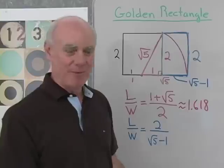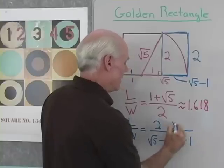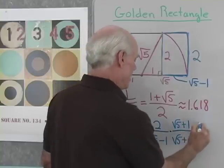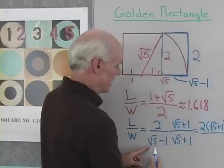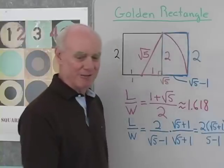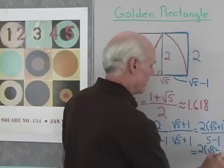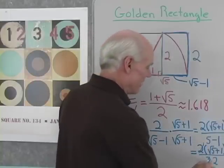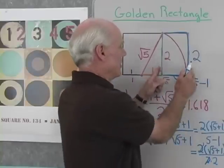We can show that by rationalizing the denominator. I'm going to multiply by (√5 + 1) in both the numerator and denominator. In the numerator I get 2 times (√5 + 1), and in the denominator I get √5 squared minus 1 squared — so 5 minus 1, which is 4. That comes out to be 2(√5 + 1) all divided by 4, which is 2 times 2. The 2's divide out and I end up with (1 + √5) / 2 for the ratio of length to width in this little rectangle.